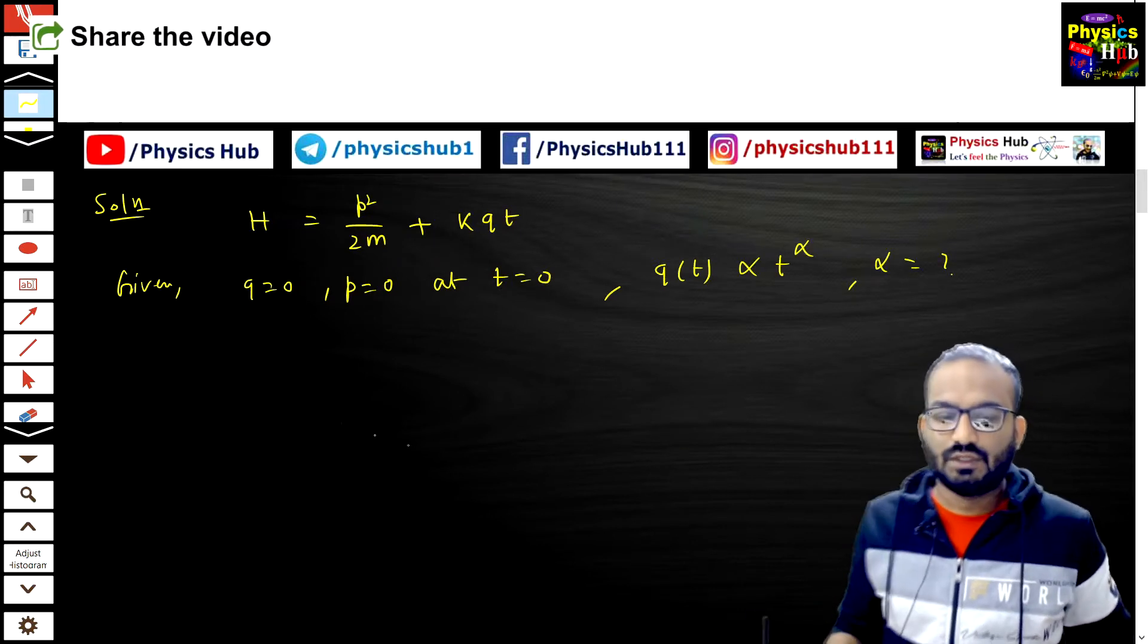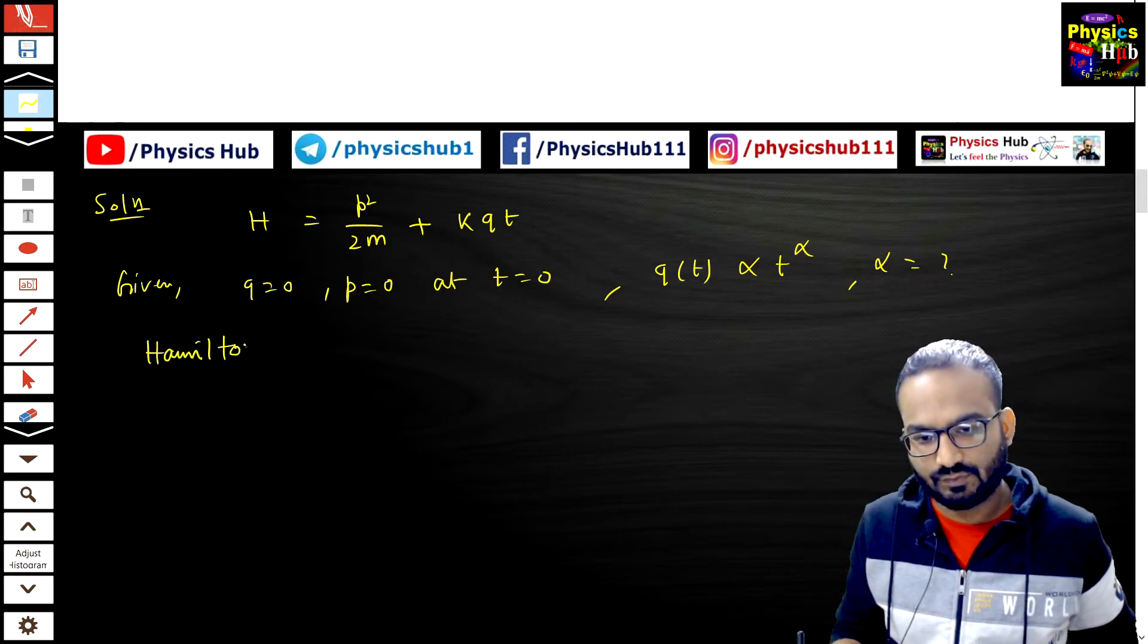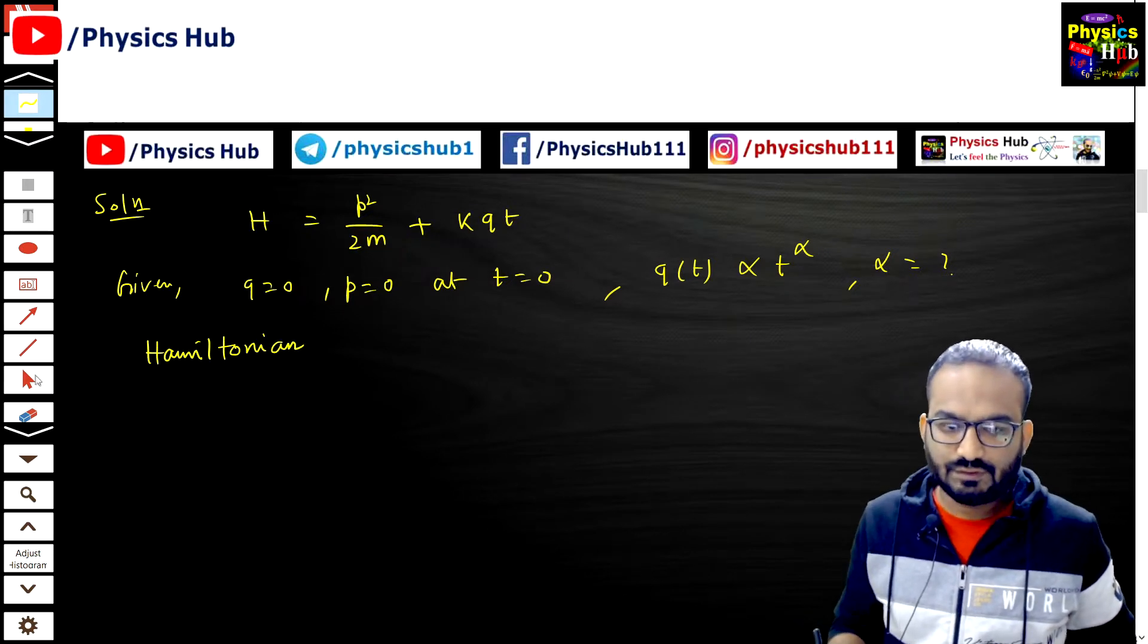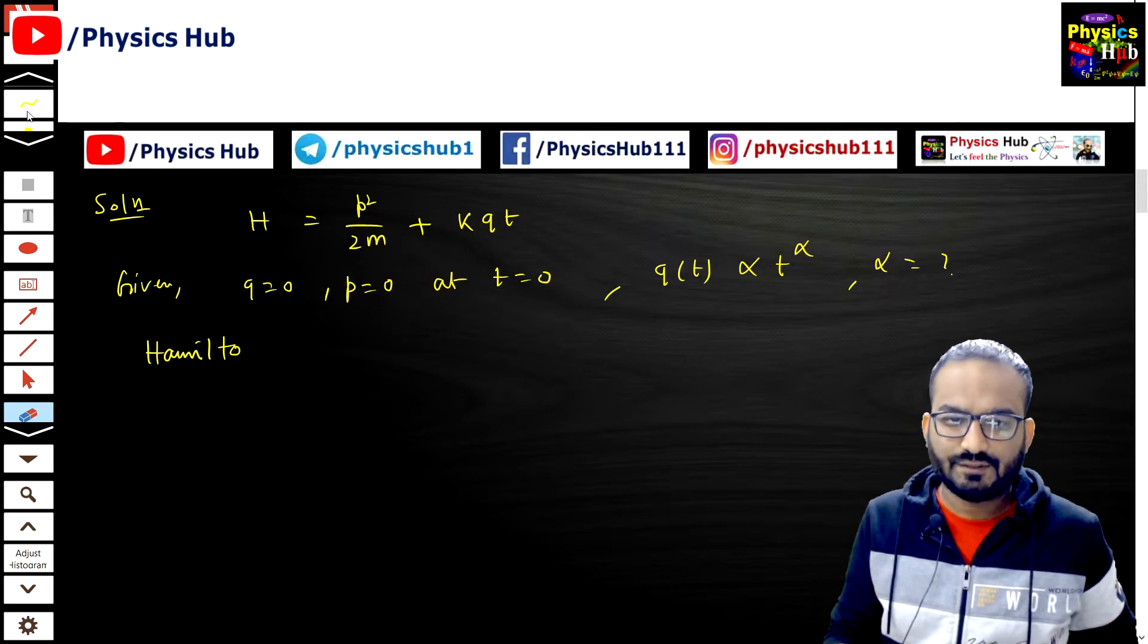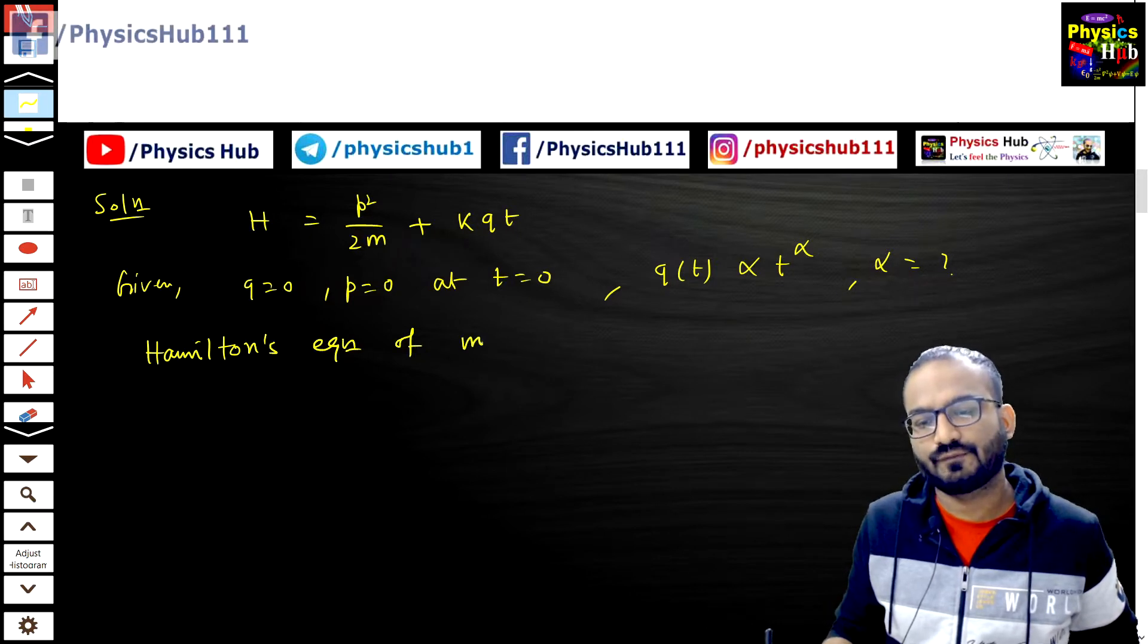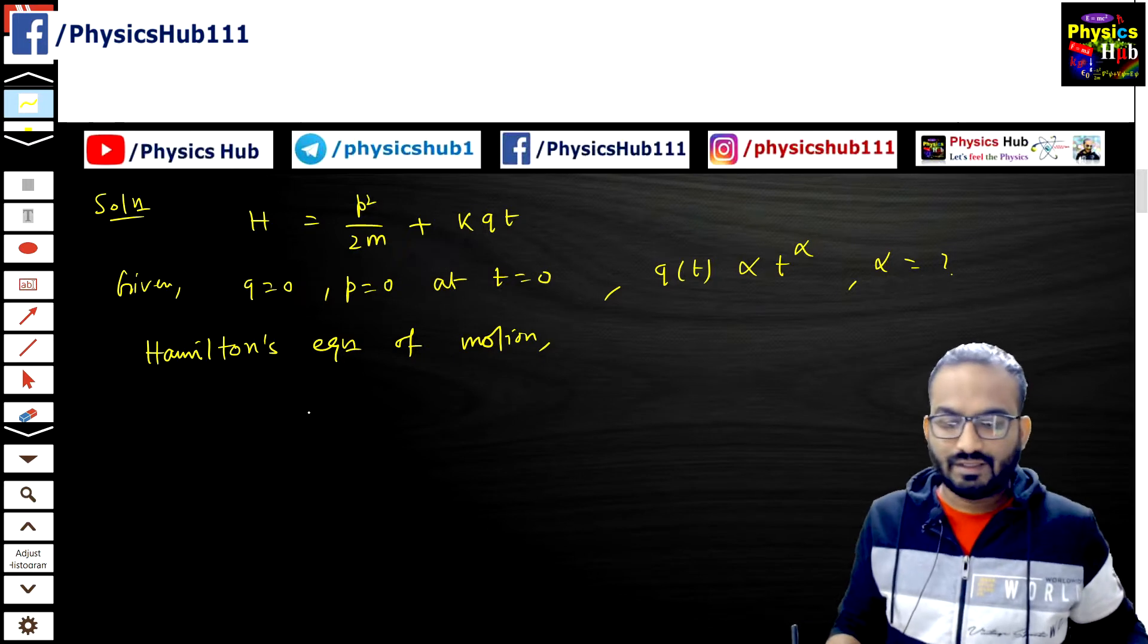So if Hamiltonian is given, we can write the Hamilton's equation of motion.